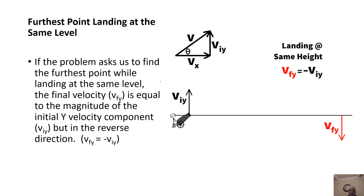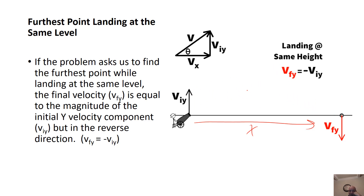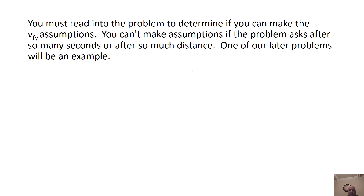The next assumption applies when we want to find how far downrange the object lands at the same height. We can assume the final Y velocity equals the initial Y velocity but negative, because it's going down. In a lot of these problems, we're going to use g = negative 10 meters per second squared because we have upward and downward motion at the same time. You really have to read the problem — in one of our last problems, we won't be able to make any assumption.